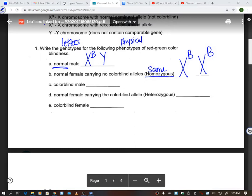C is a male. So right away, I'm going to do the XY. Now we know the Y has nothing there. It does not have the colorblind allele on there. But if you're colorblind, then you have that little lowercase b, that recessive trait.